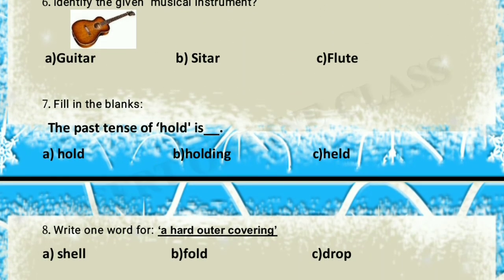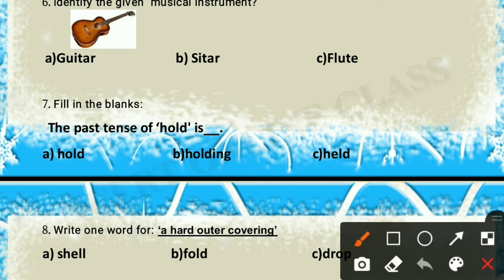Question 6: identify the given musical instrument. It is a guitar, so option A is the correct answer.